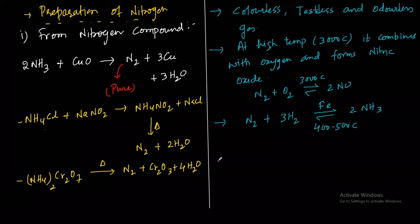Most important reaction is with metals. Nitrogen combines with metals to form nitrides. For example, 6Li plus N2 at 450°C forms 2Li3N lithium nitride. With magnesium: 3Mg plus N2 at the same temperature gives Mg3N2 magnesium nitride.